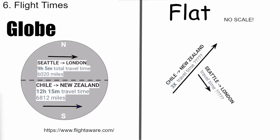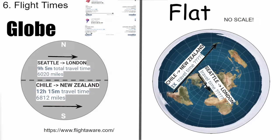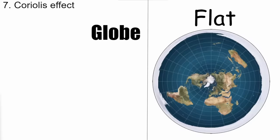Real flight data from FlightAware shows: Chile to New Zealand is a 12-hour flight covering 7,000 miles; Seattle to London is a nine-hour flight covering 6,000 miles. This is broadly consistent with a globe. On a flat Earth map, Chile to New Zealand would be about three times longer than Seattle to London — implying roughly a 30-hour flight. The answer is no — it's only 12 hours.